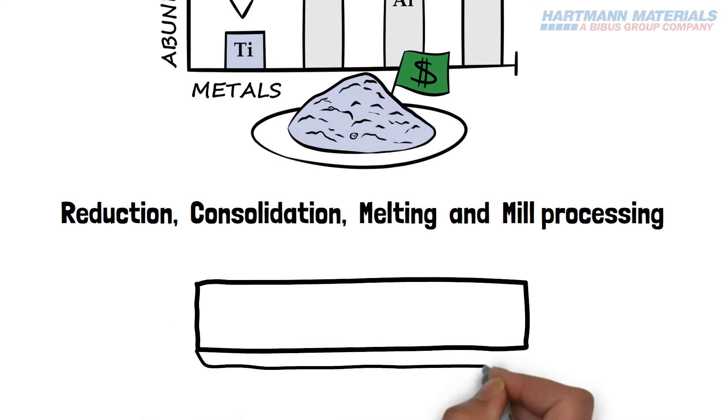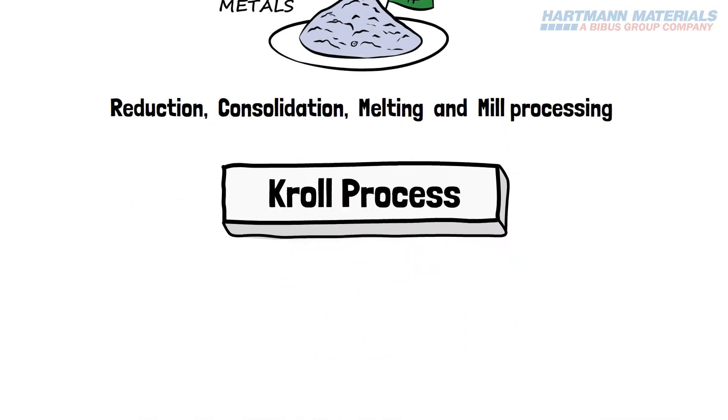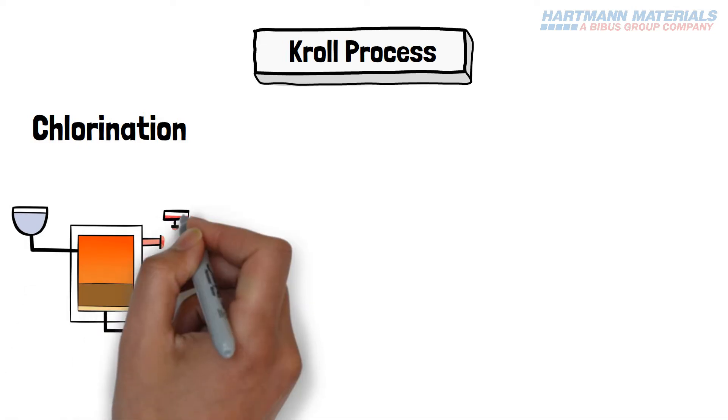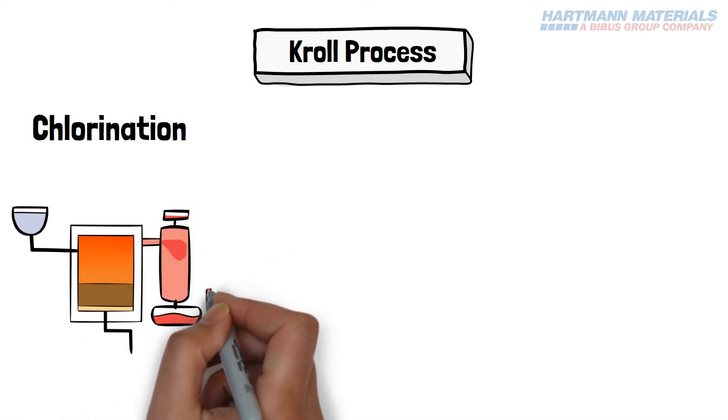Reduction of titanium ore occurs through the Kroll process, which has several stages. The ore is chlorinated to produce what is known as tickle, or titanium chloride.